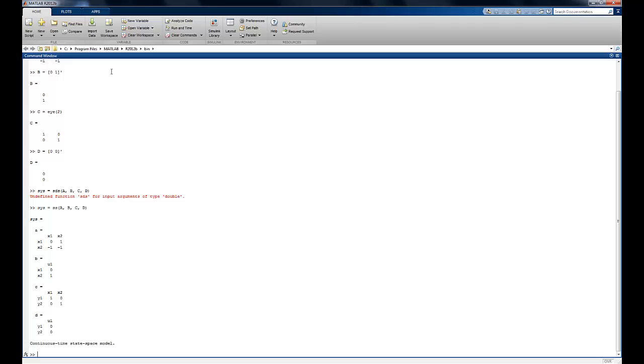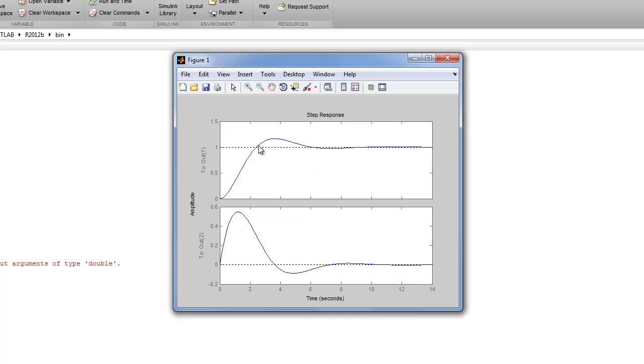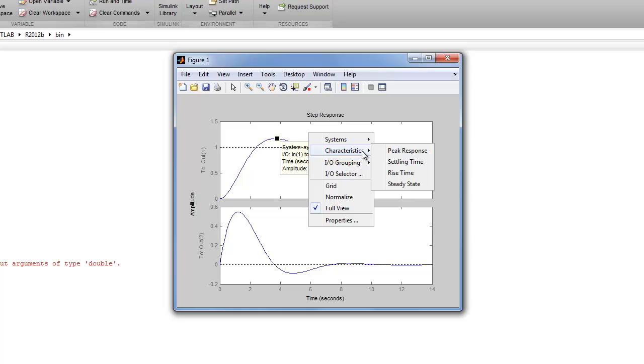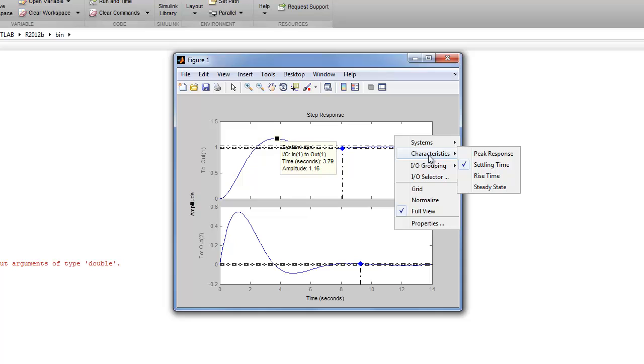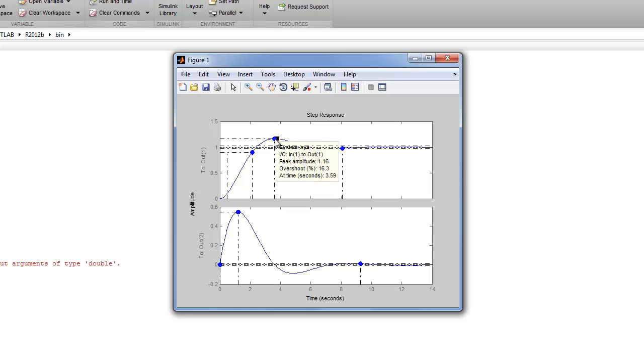We could look at the response of this system by using the step command, and this would be the open loop response. Notice the step command gives us the position and the velocity of the system over time. That's the open loop. If we put the performance characteristics on there and look at our peak response, rise time, and peak response, we see that we don't meet our performance criteria open loop.